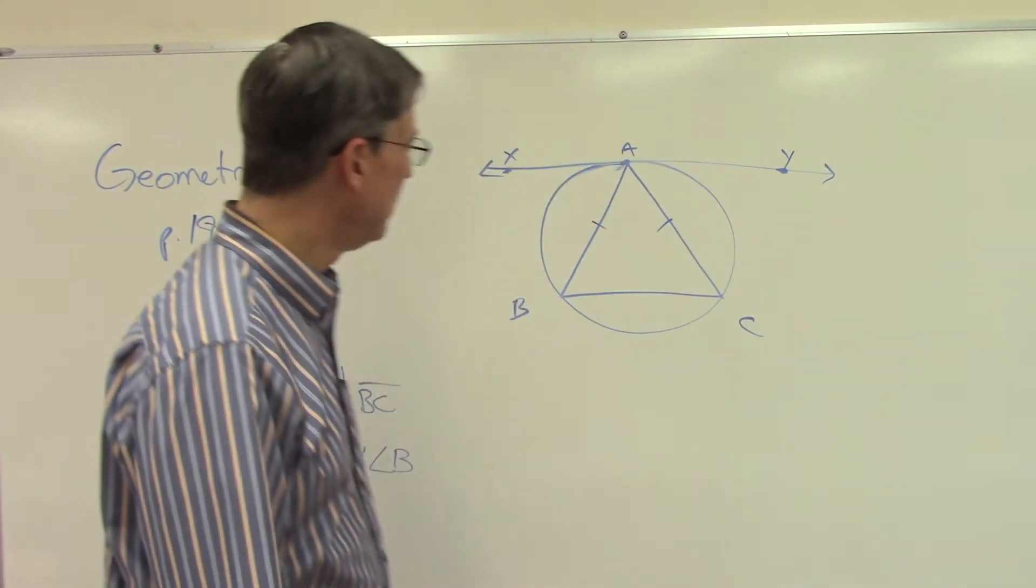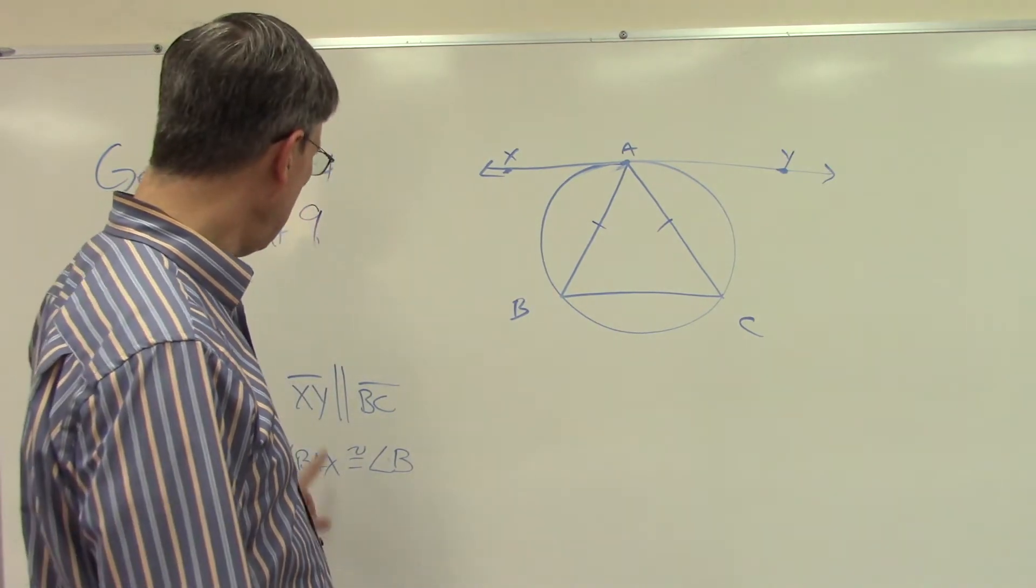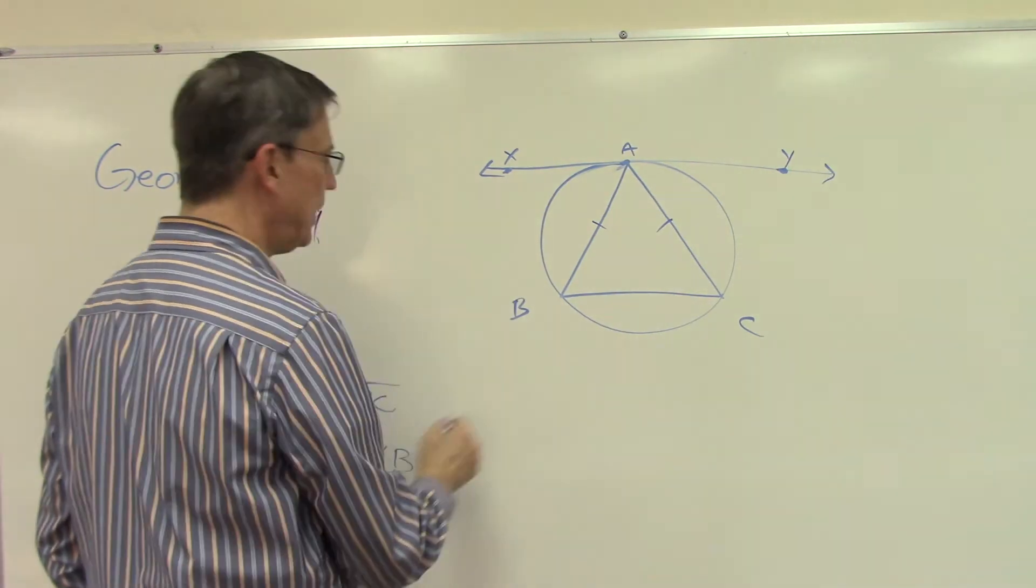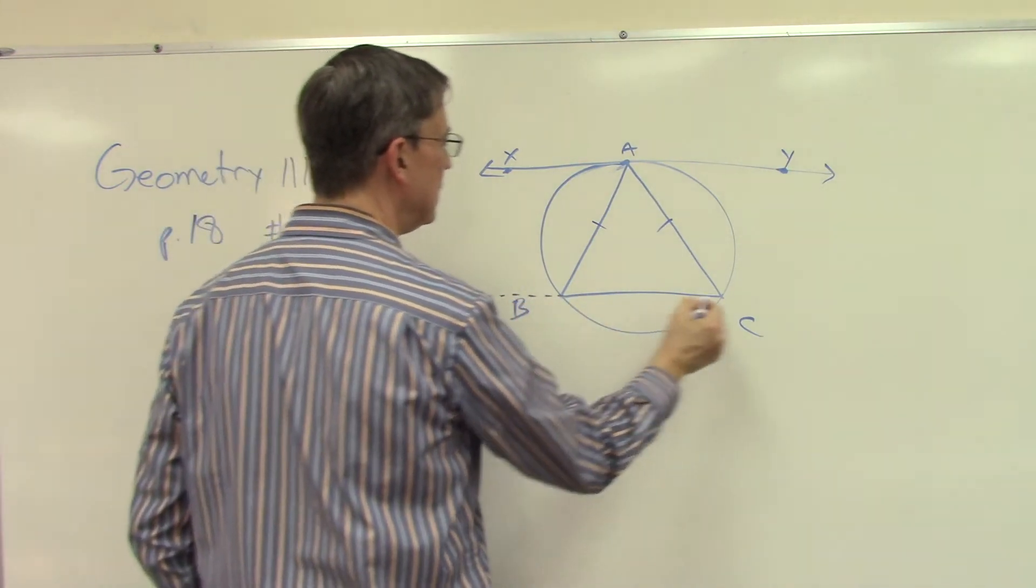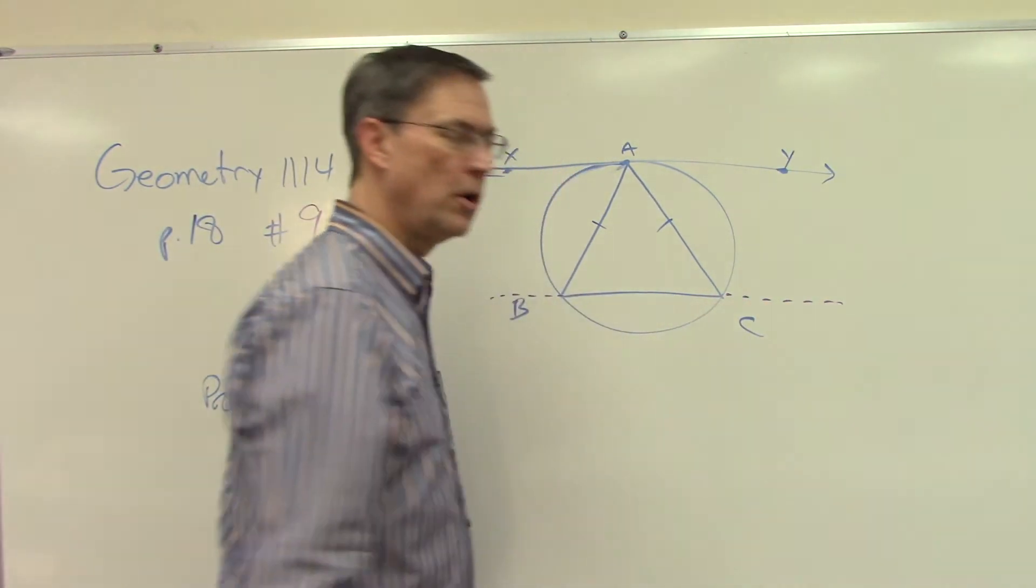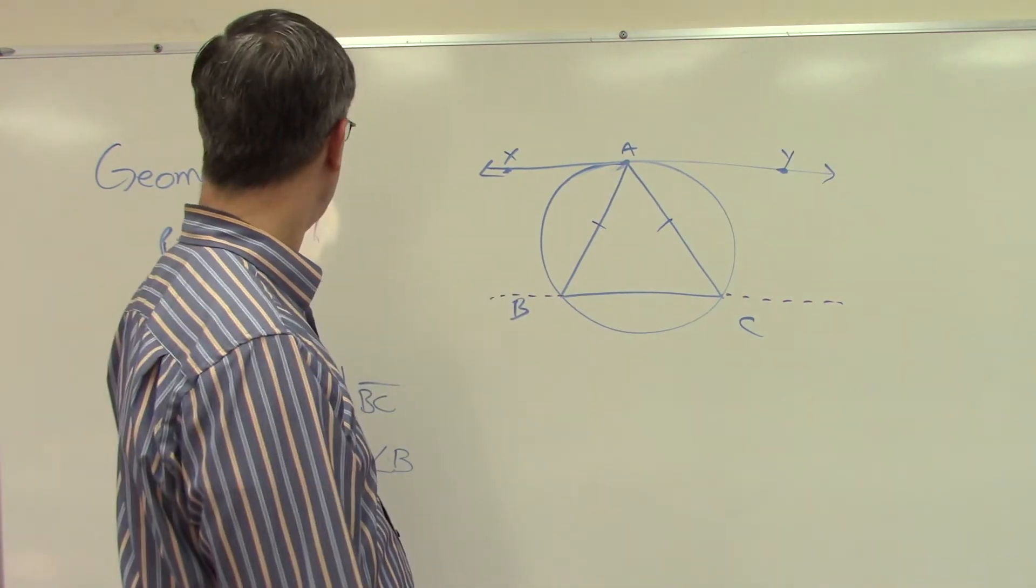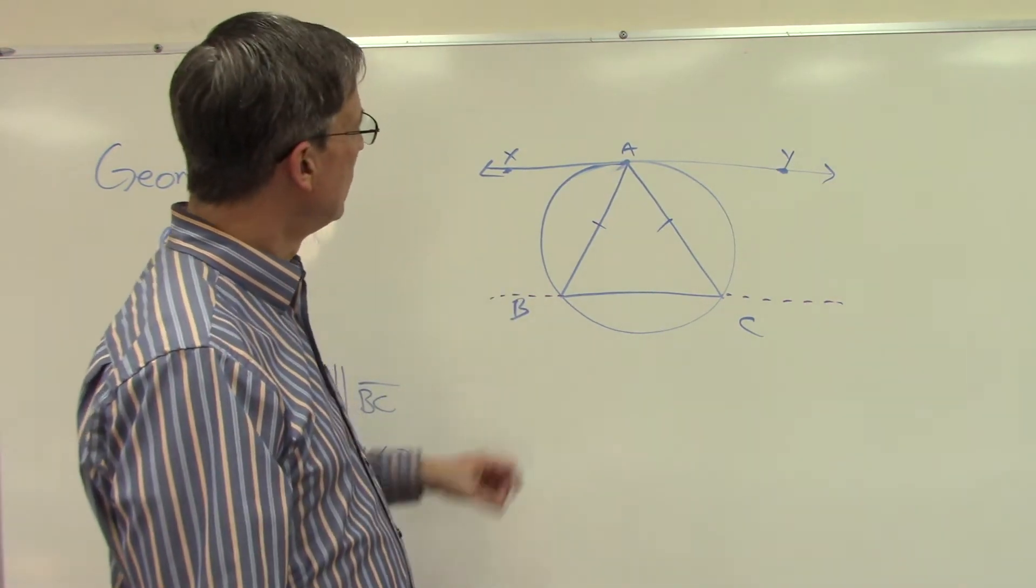Now we're going to use both of those. Let's see what we need to prove here. We're trying to prove that XY is parallel to BC.